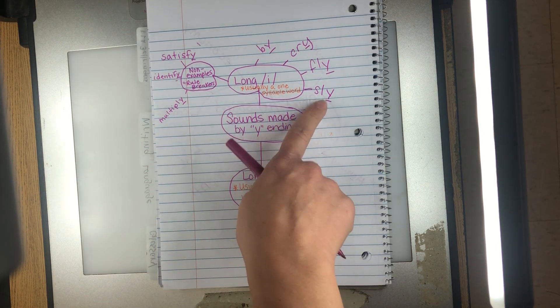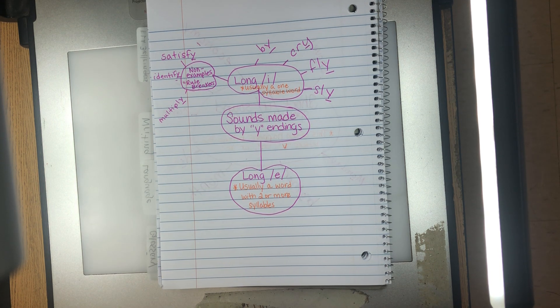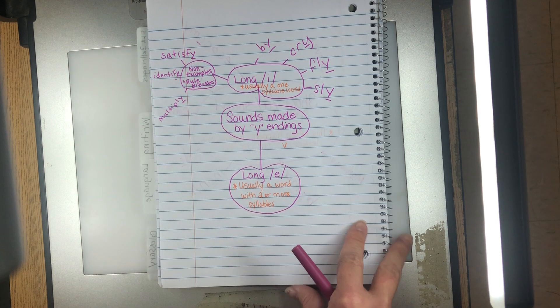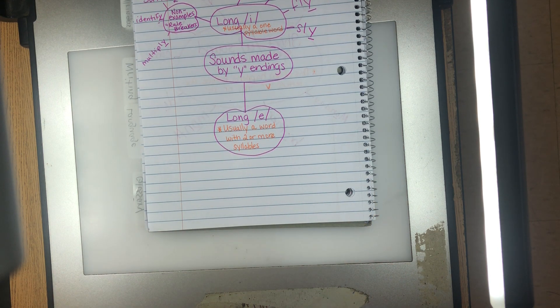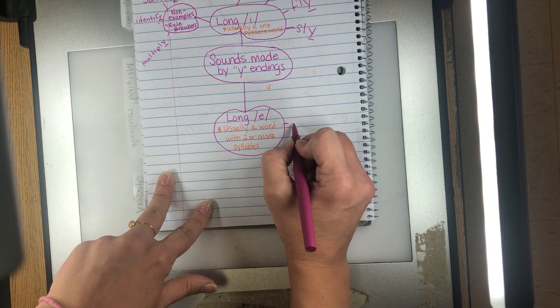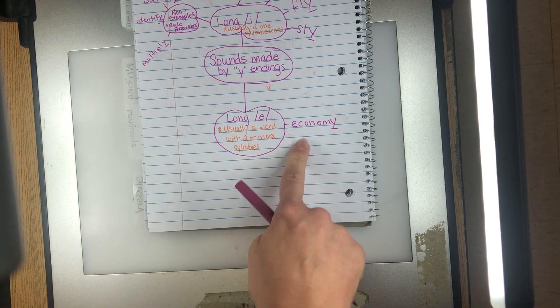Multiply. So these are some non-examples, some rule breakers. Like I said, it's not always the case, but kind of when in doubt, usually the I sound will be at the end of a one syllable word. A long E sound is usually going to happen when a word has two or more syllables. So our one example would be economy. We know it's a four syllable word.